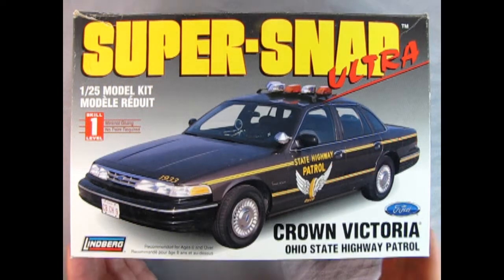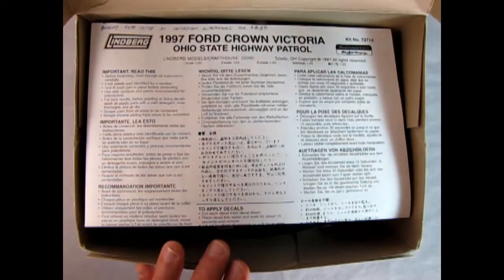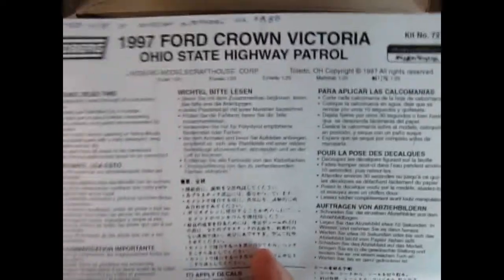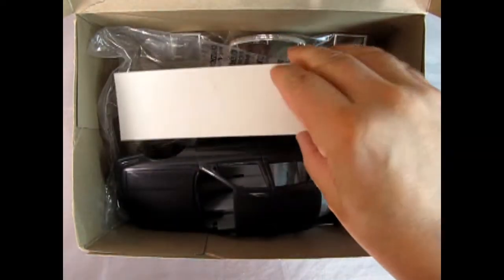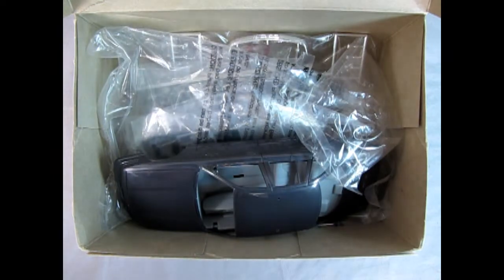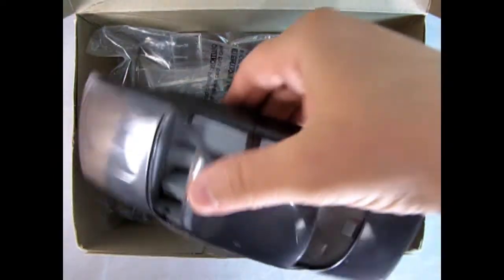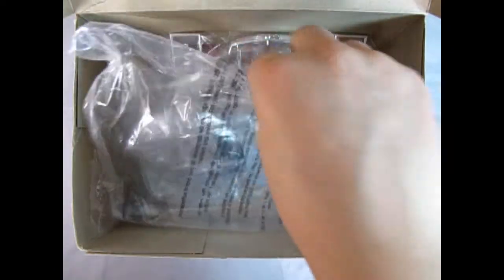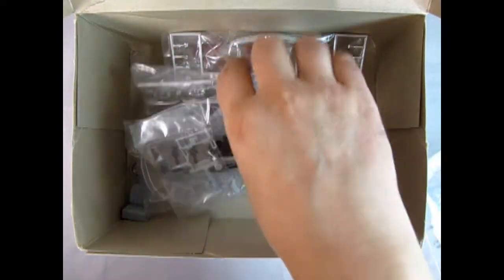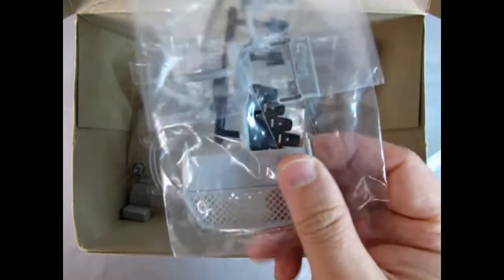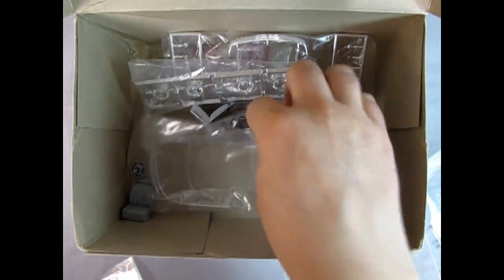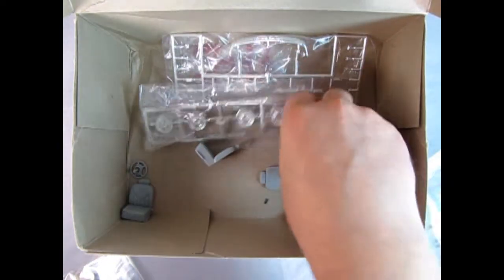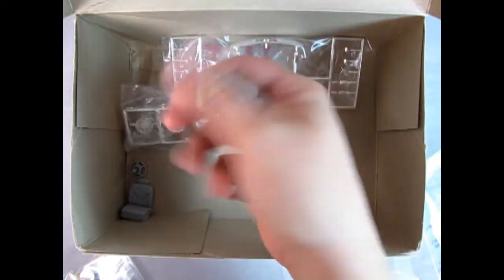As we open the box we see our instruction sheet which Danny the dog will look at just after this segment. We also have our decal sheet which Danny will show you at the end of the video. Then here we have our nice body and the interior and our chassis. There's some of the police package stuff in there.